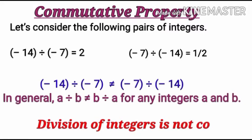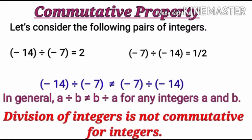Division of integers is not commutative for integers. Now the next property is division of an integer by 0.